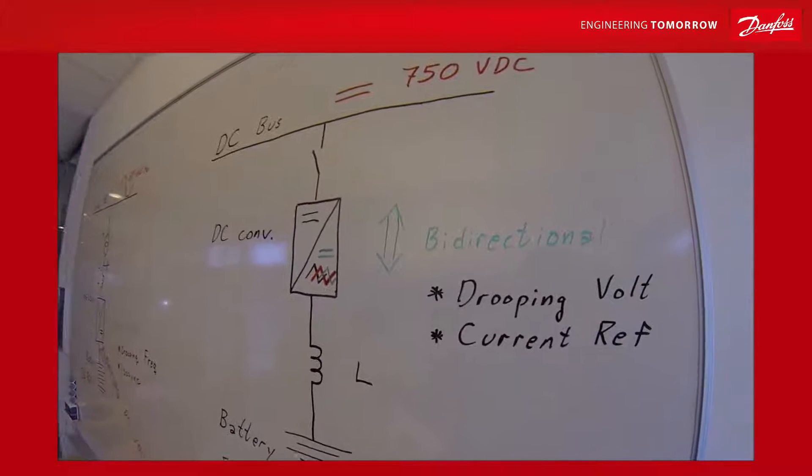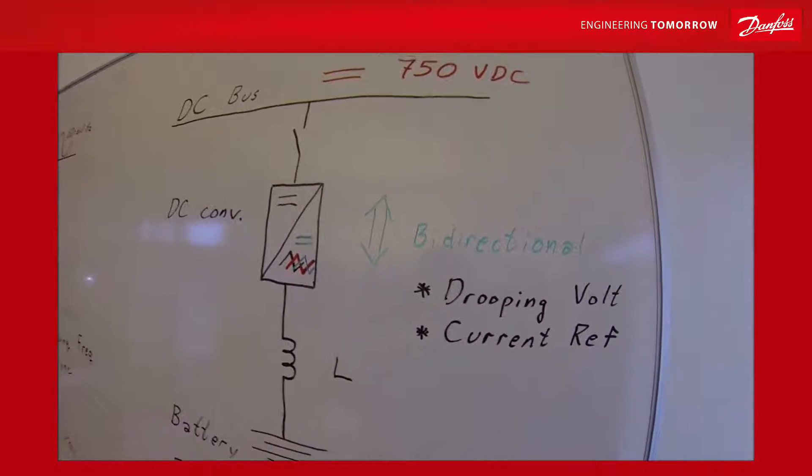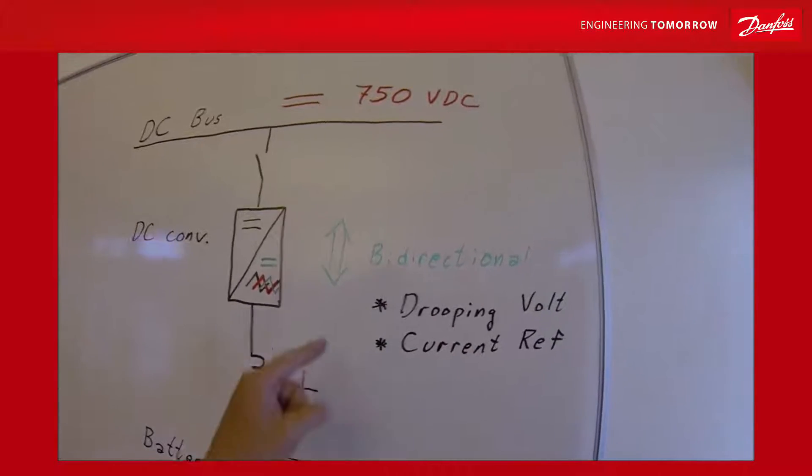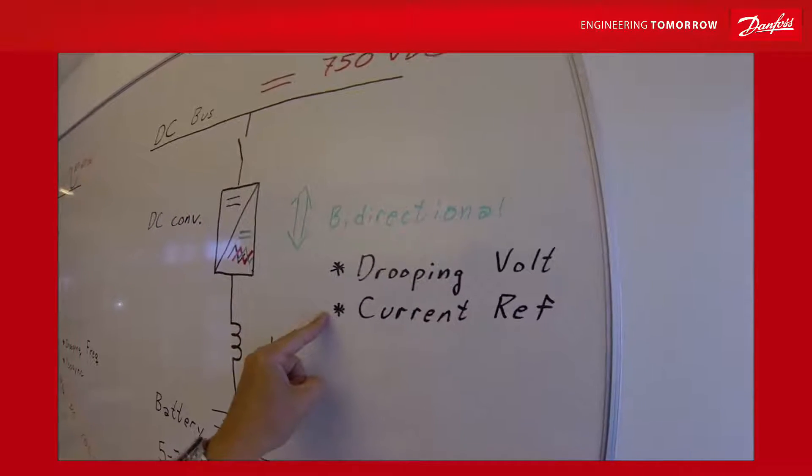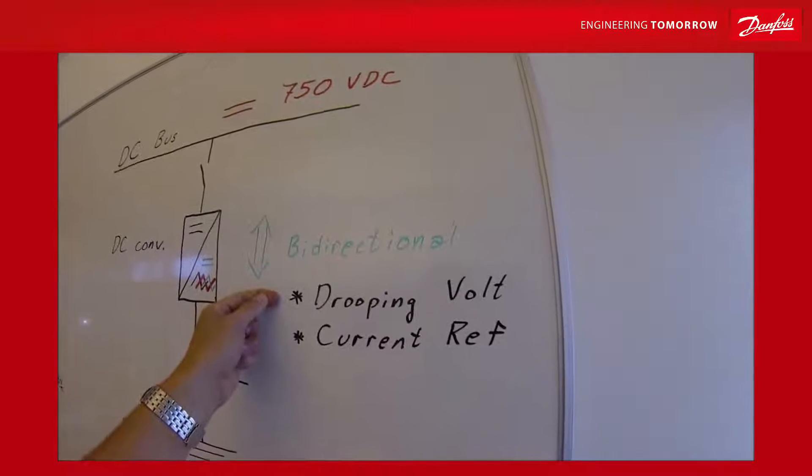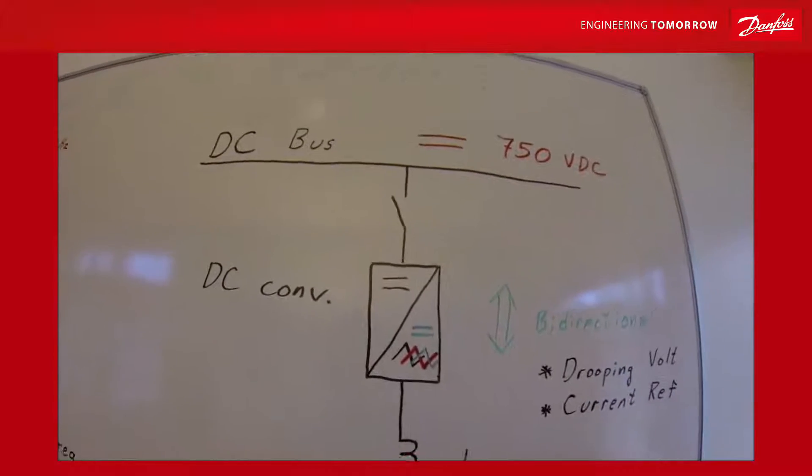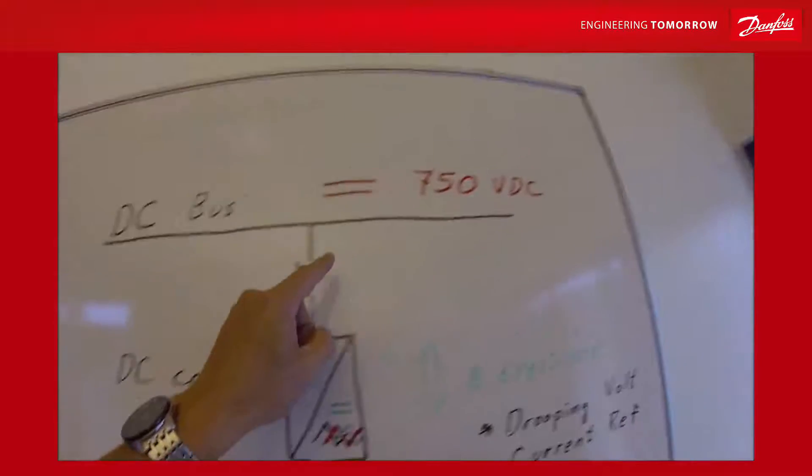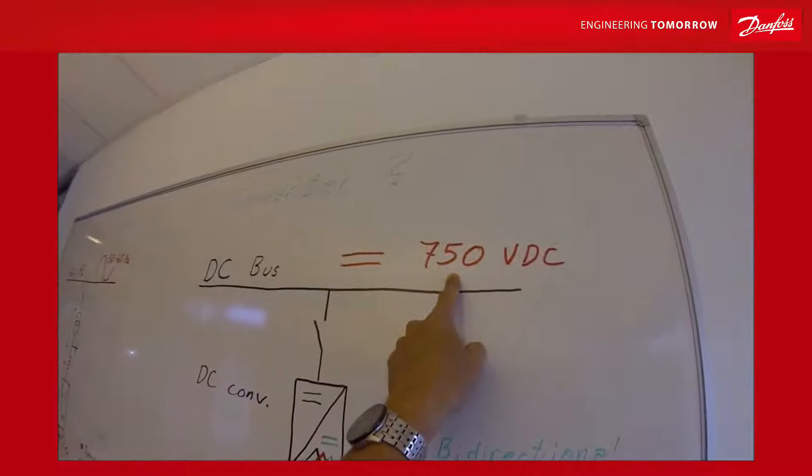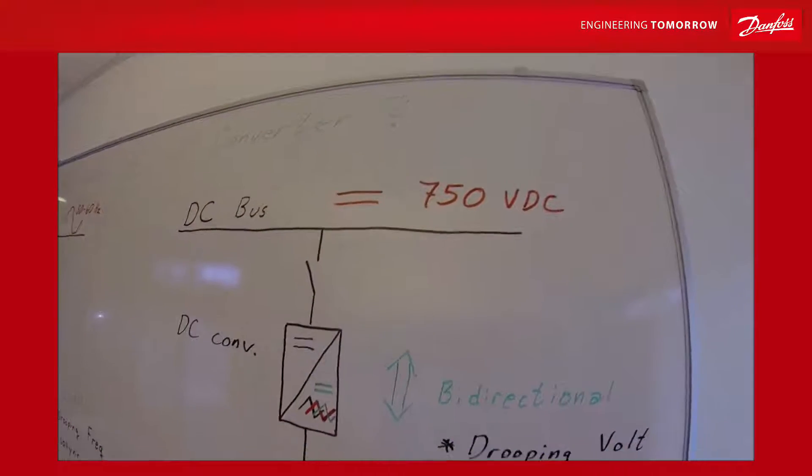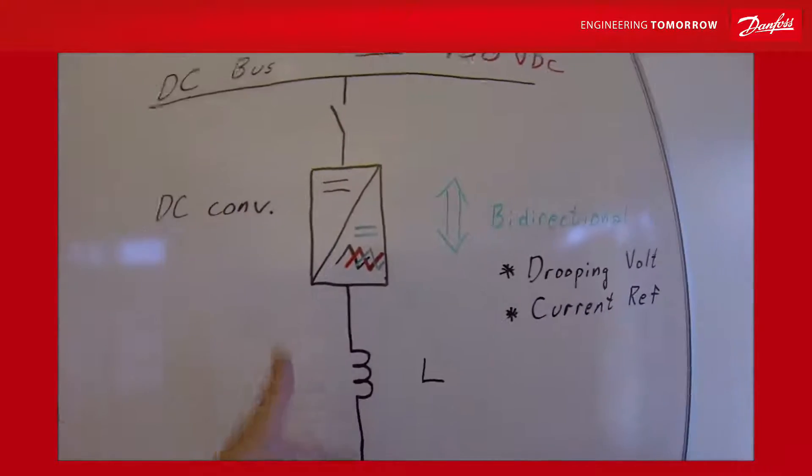Well actually from the operator side it's quite easy. There are two ways of controlling it. You can control it in drooping voltage. This is just like active front ends do, that is basically that you aim for the same voltage as the common DC bus and then you have some drooping as function of the load.